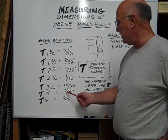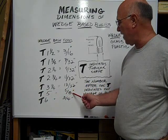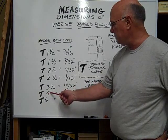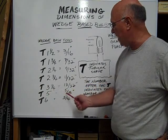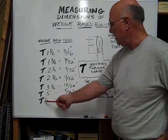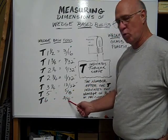A T five is equivalent to five eighths of an inch. As you see, that's a whole number, so it's actually five eighths. So a T six would be three quarters of an inch.